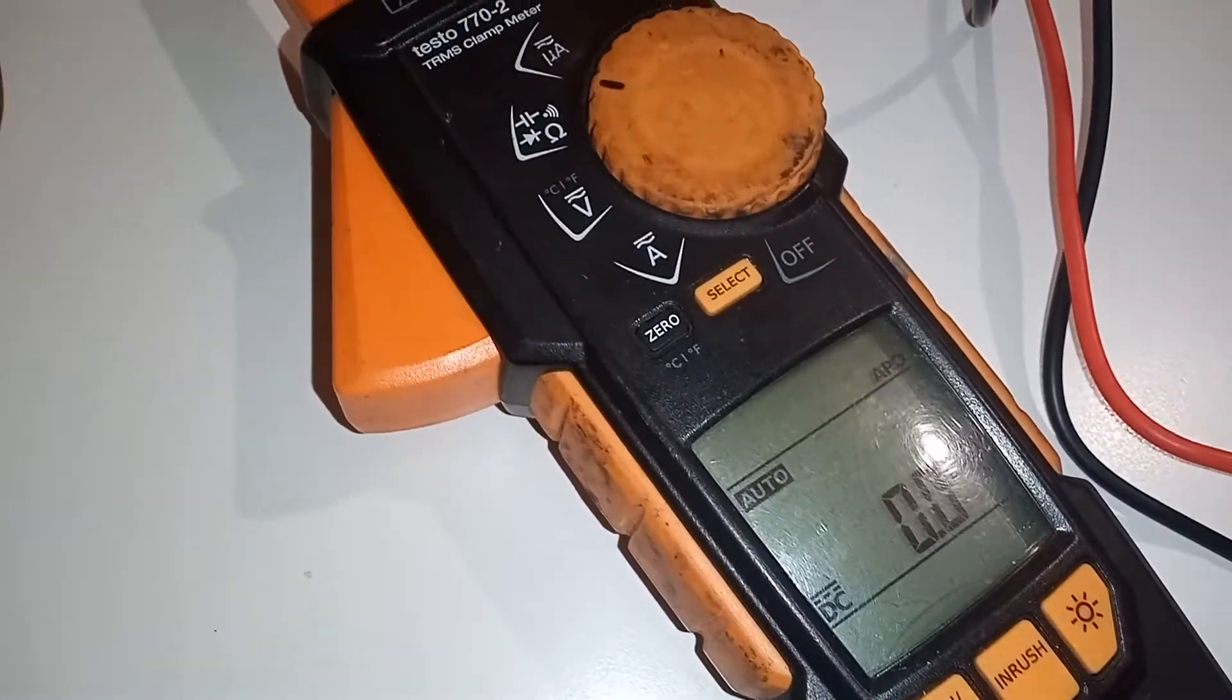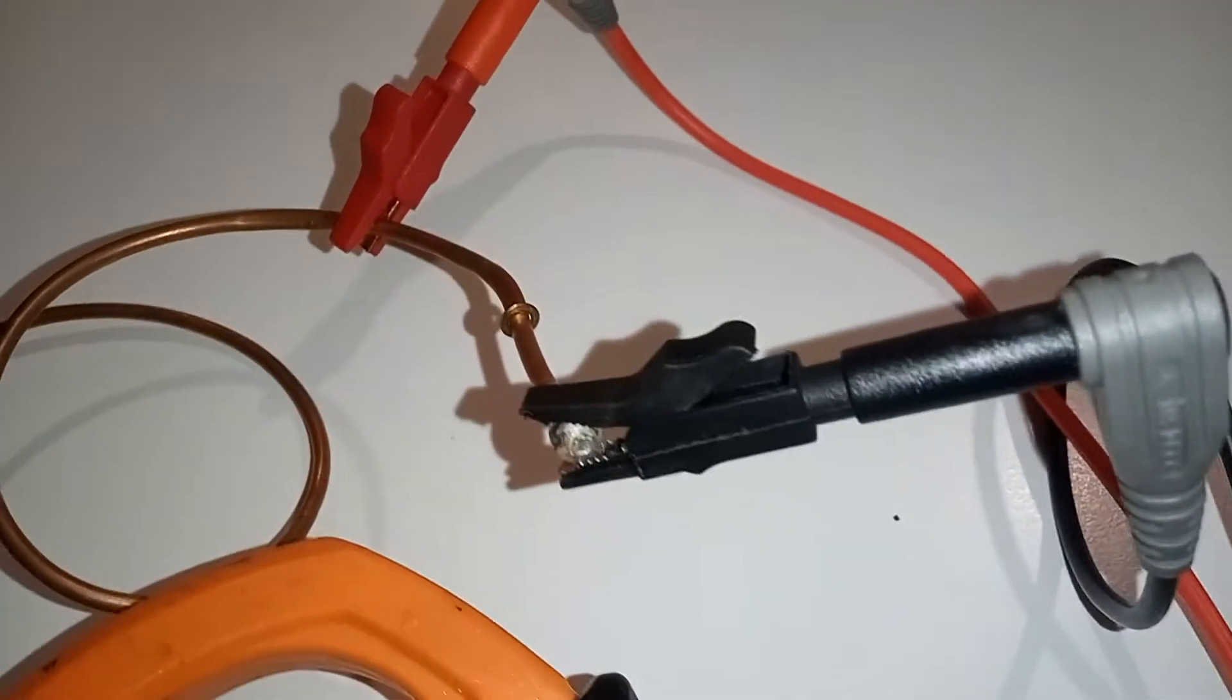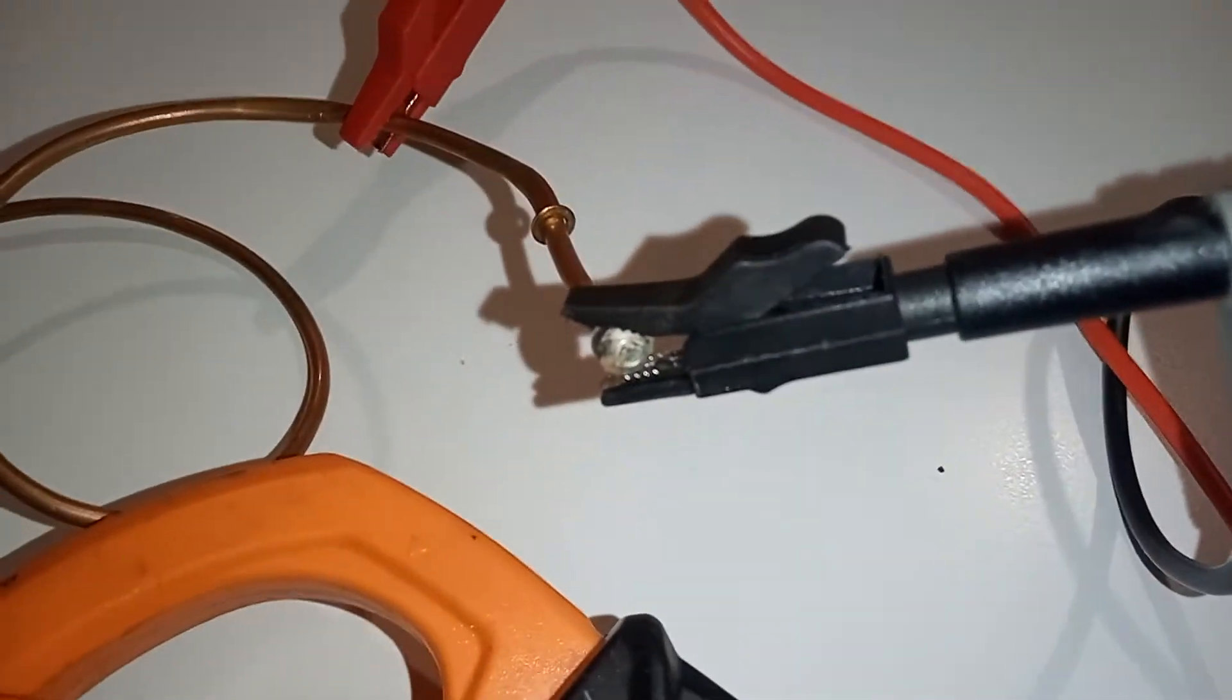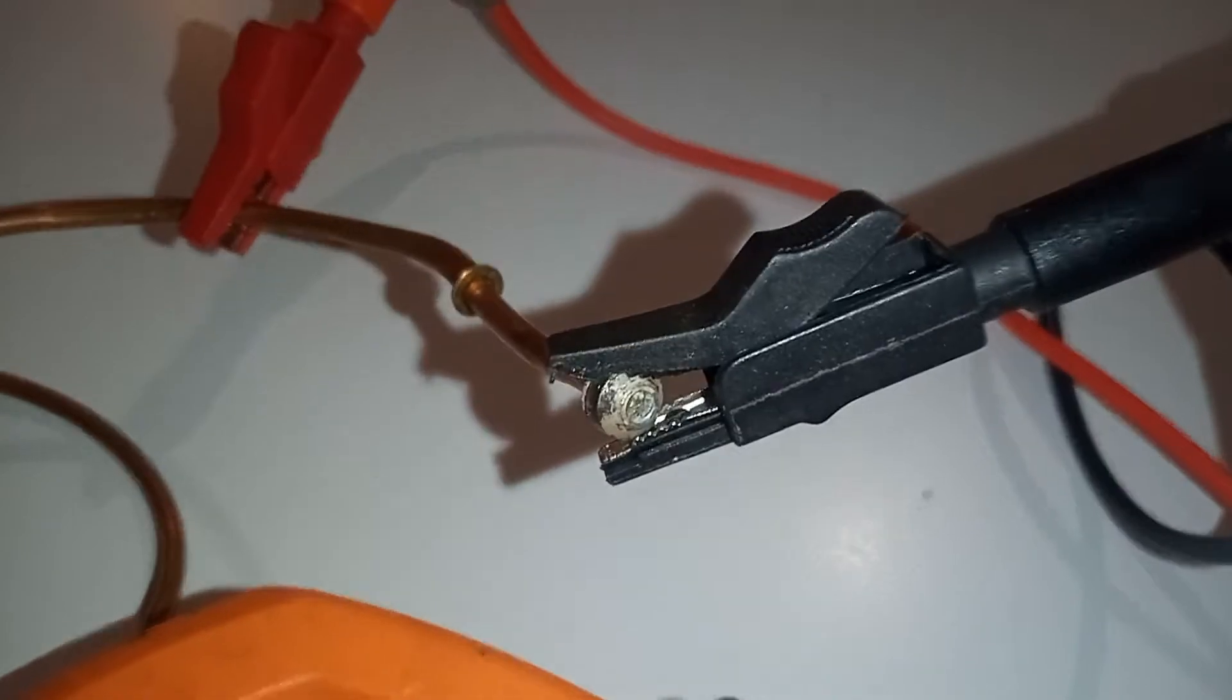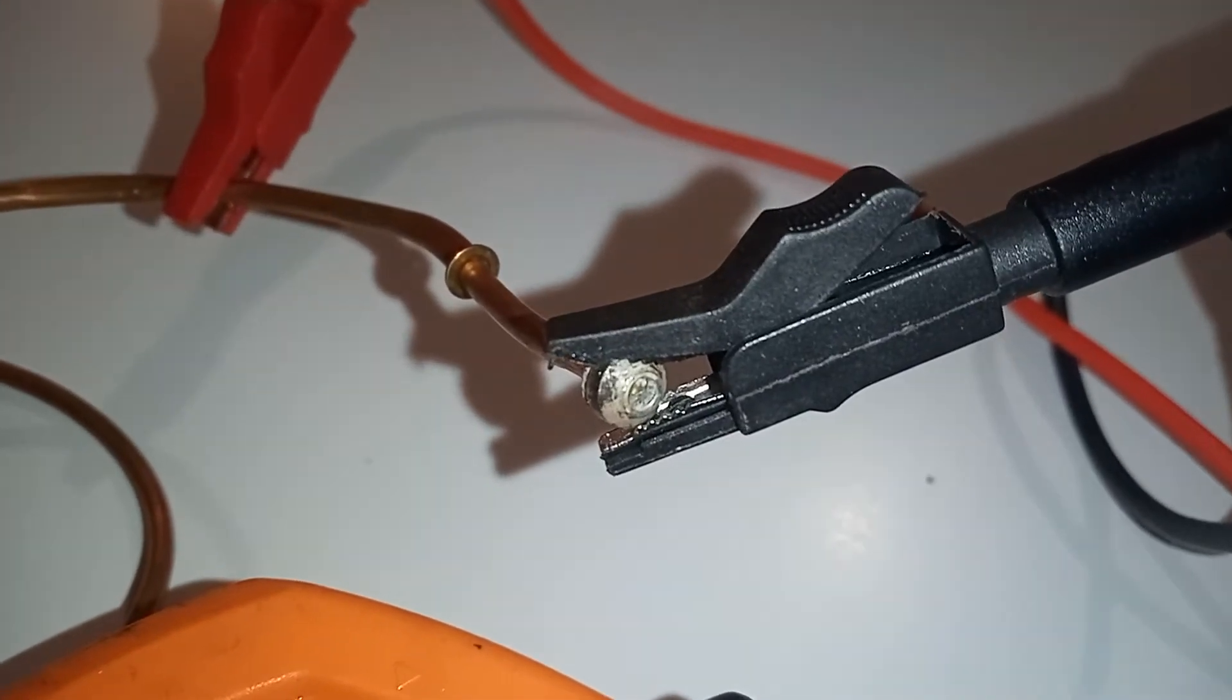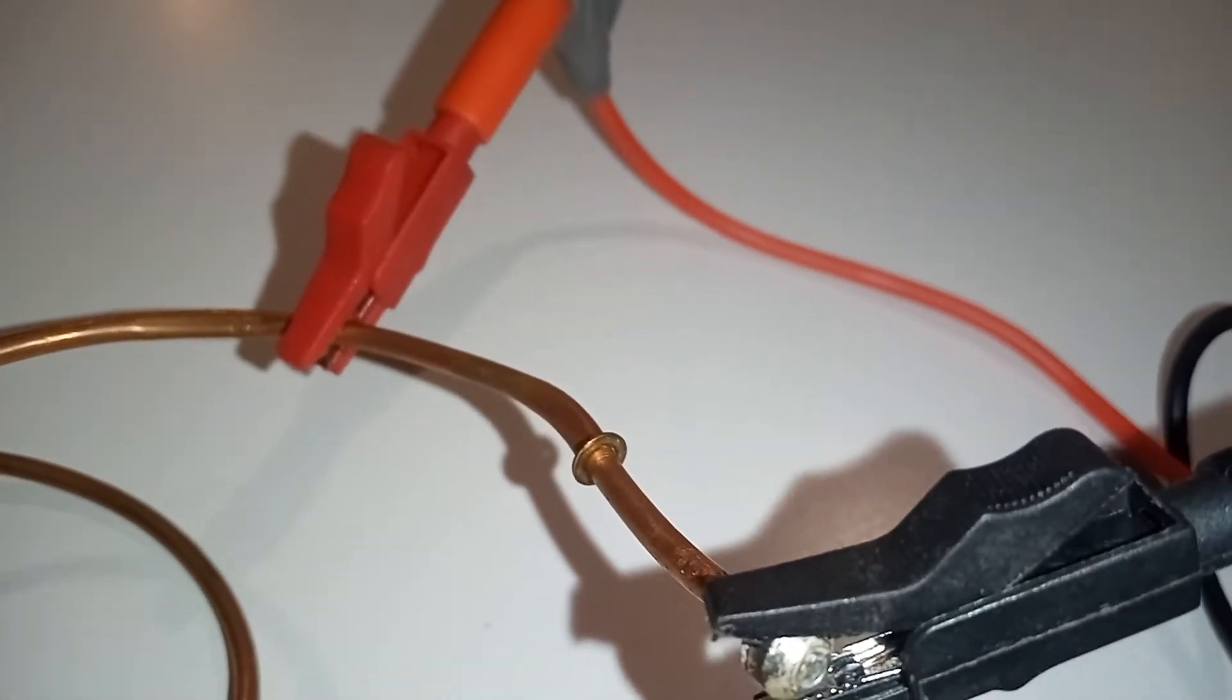So we have a multimeter and the crocodile clips are connected to the appropriate ends. We have our black crocodile clip on this end and our red on that end.